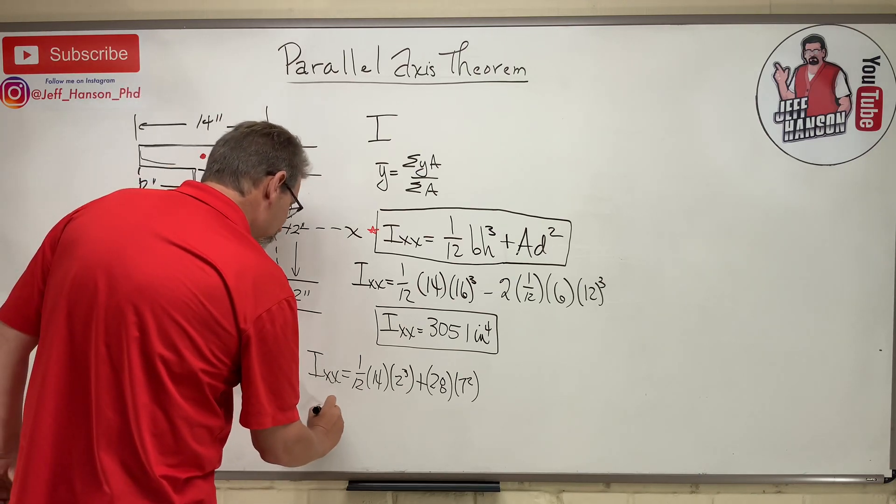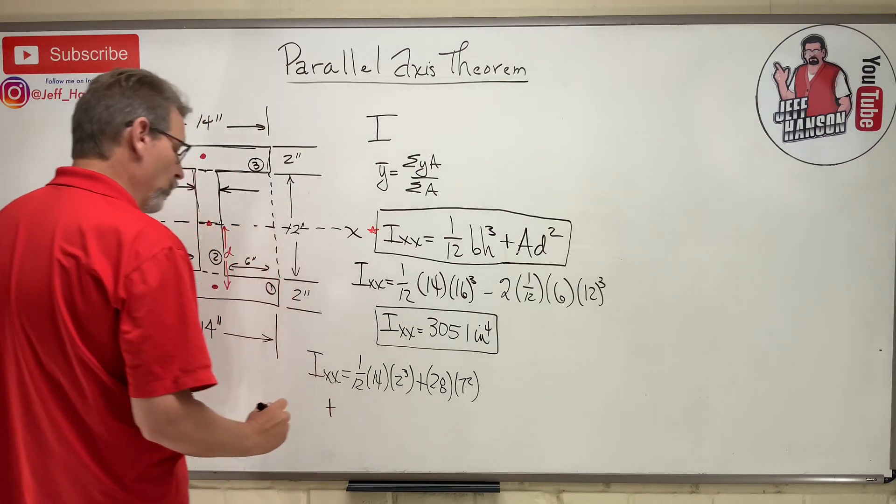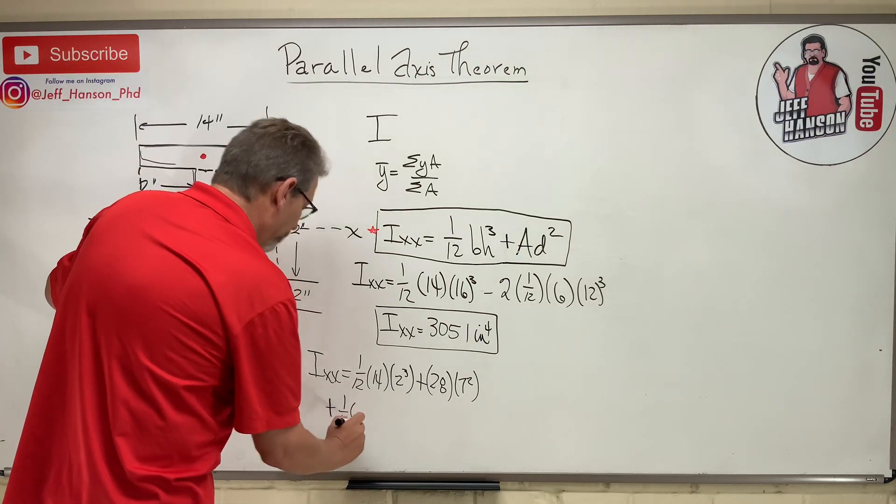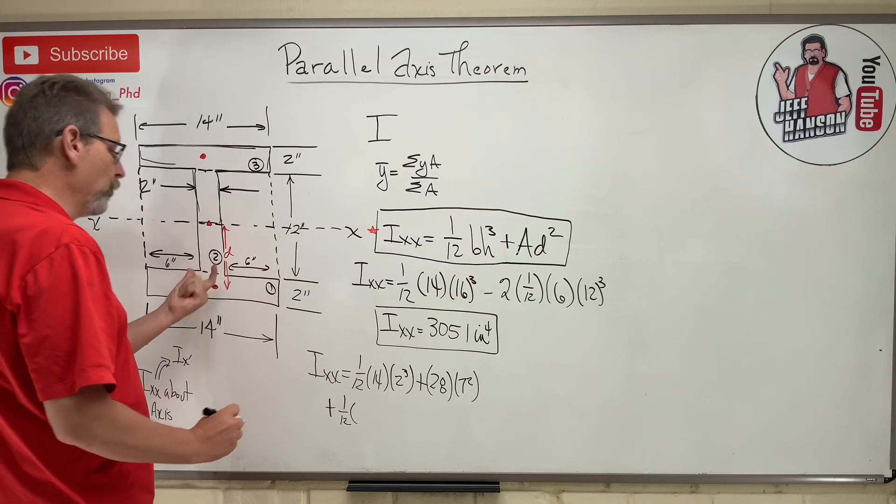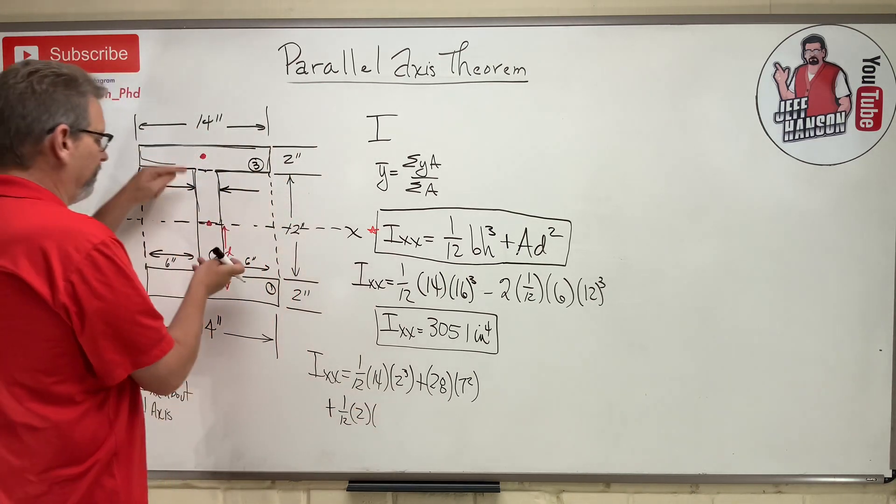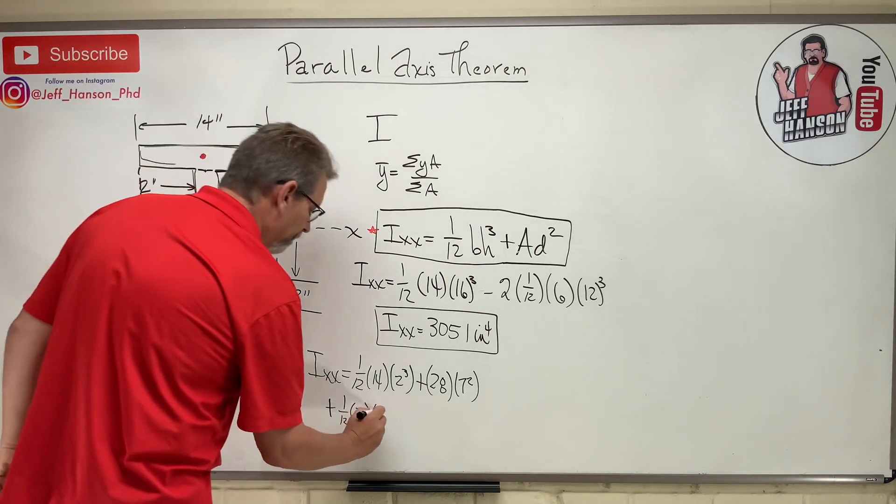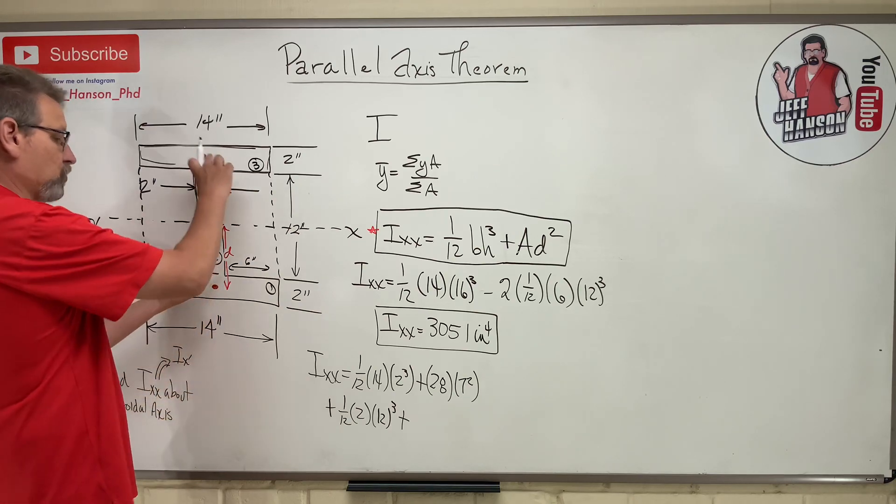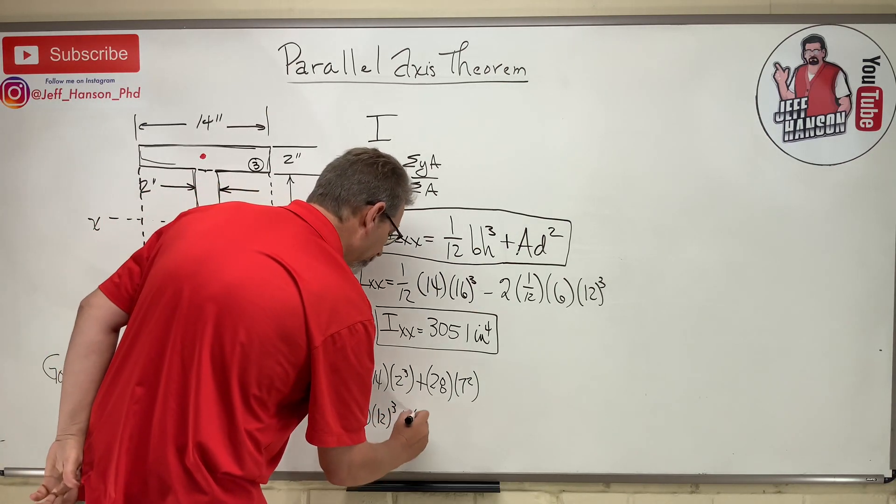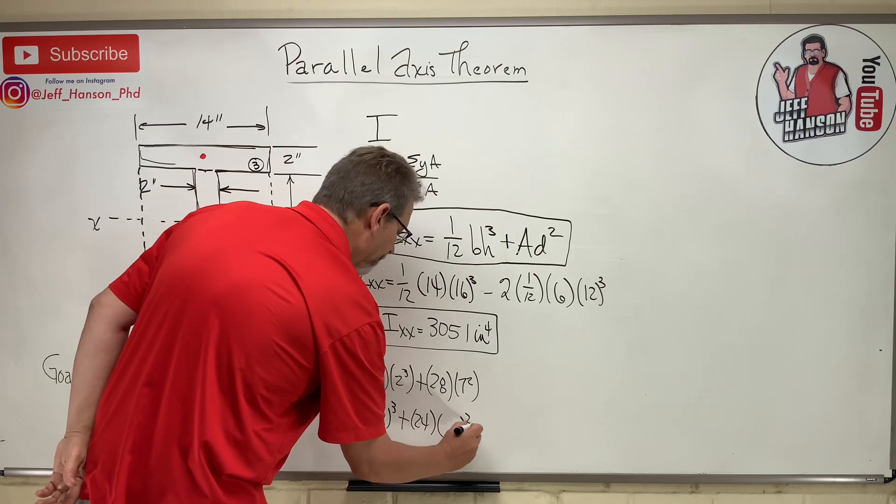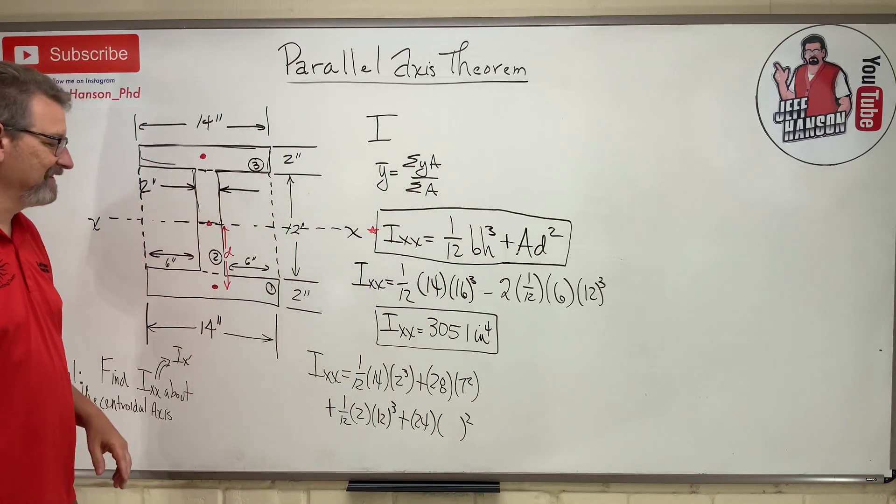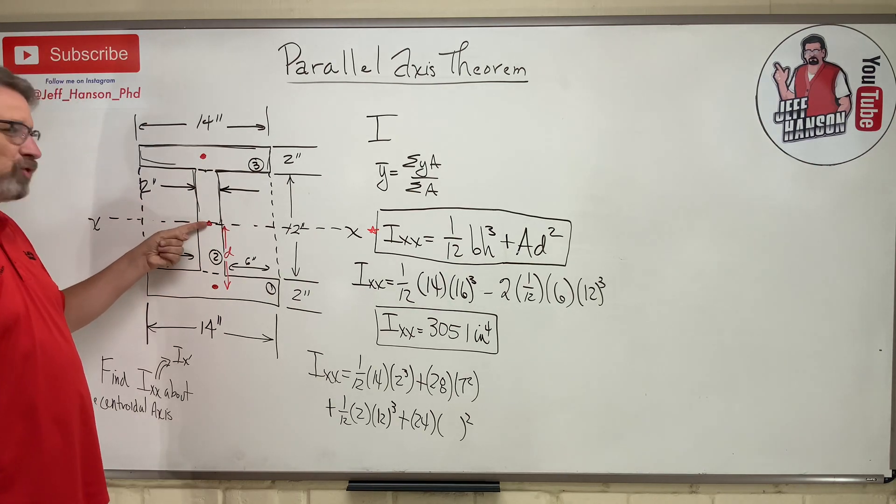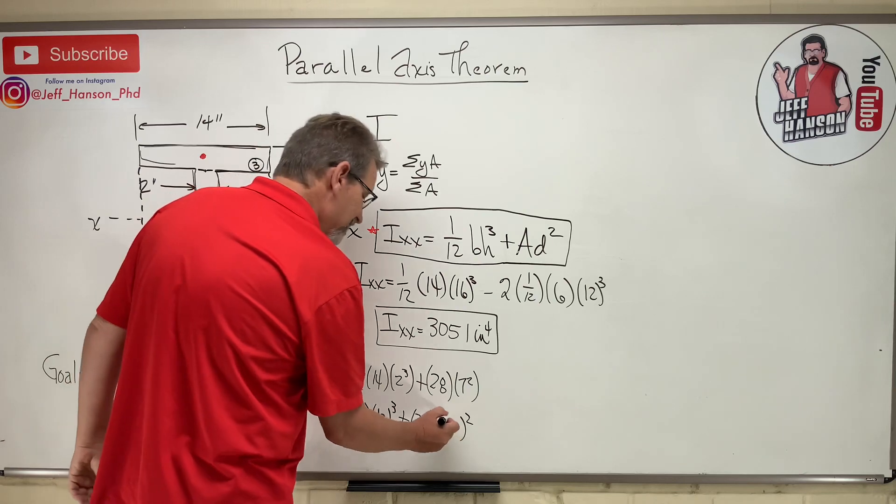There's piece number one plus piece number two. Piece number two. What's piece number two? That's this middle guy, which is one twelfth. The base, two times the height, 12 cubed, plus the area, which is what? Two times 12. That's 24 times the distance. What's the distance? She's going the distance. The distance is zero. The centroid is on the neutral axis.